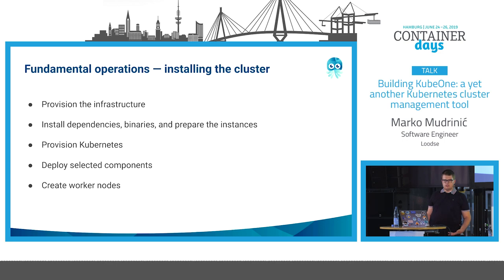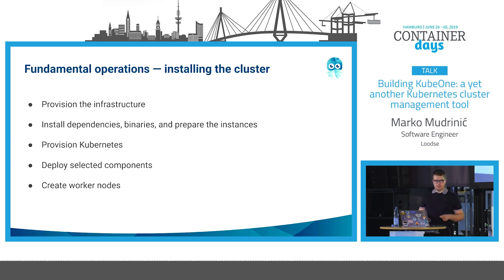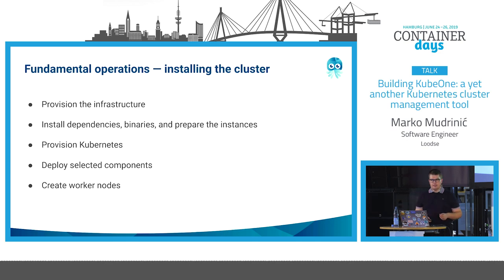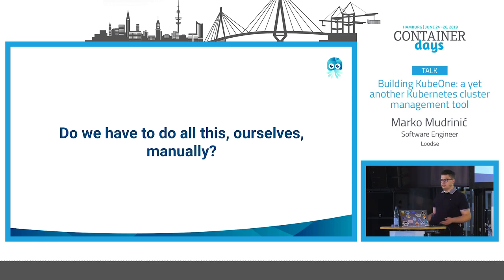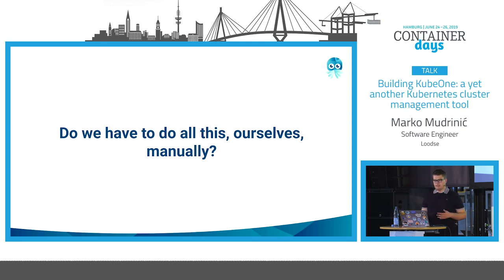Installing the cluster usually involves the following tasks: provisioning the infrastructure - creating nodes, backing load balancers, and the VMs where Kubernetes will run. Then installing dependencies, binaries, and preparing the instances by configuring Docker, networking, and everything needed. Then, most importantly, provisioning Kubernetes. Deploying selected components like CNI or metrics server. And finally, creating worker nodes so you can deploy workloads and start using the cluster. There is a lot of tasks here, and we don't really have to do all of that ourselves manually - if there is a tool that does it well, we want to reuse it.